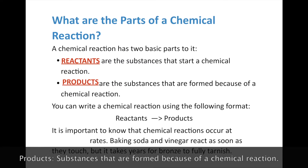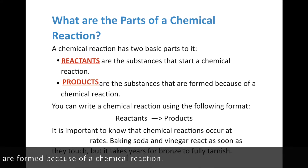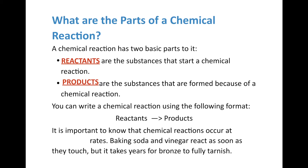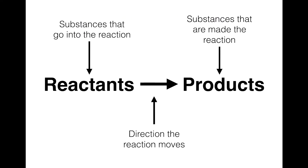You can write a chemical reaction using the following format: the reactants, then an arrow. The arrow indicates which direction the chemical reaction proceeds to form the products. It's important to know that chemical reactions occur at different rates. Baking soda and vinegar react as soon as they touch, but it takes years for bronze to fully tarnish. So a written chemical equation doesn't tell you anything about the amount of time the reaction takes.